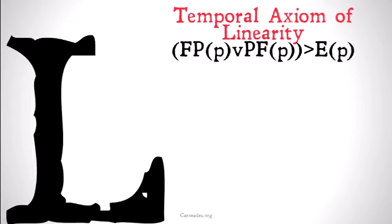The temporal axiom of linearity looks as follows: If at some point in the future it will be the case that at some point in the past it was the case that P, or at some point in the past it was the case that at some point in the future it will be the case that P, then at some point either in the future or the past, it will be the case, or has been the case, or now is the case that P.